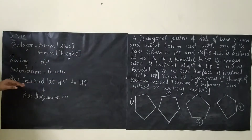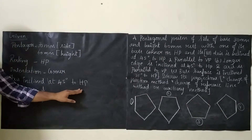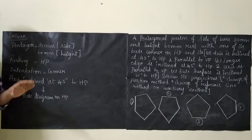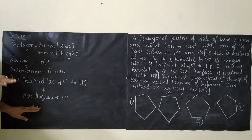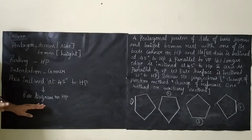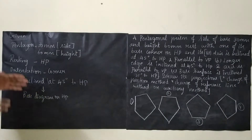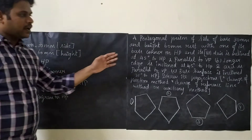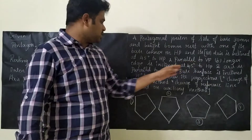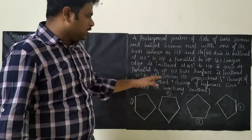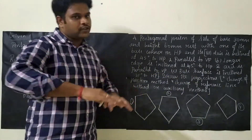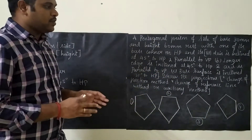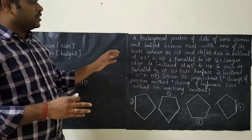If they say axis is inclined at 45 degrees to HP, then we have to draw the base diagram on HP. In the remaining cases involving longer range and base surface, I will be explaining at the end after completing the exam.